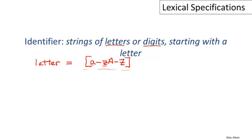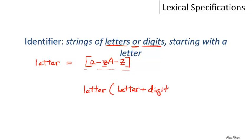Now we're in great shape. We already have a definition for digit, and now we have a definition for letter. So we can write out the rest of this definition. We want the whole regular expression to always begin with a letter — an identifier always begins with a letter. After that, it's allowed to be a string of letters or digits, so the OR suggests a union. After the first letter, we can have either a letter or a digit, and then an arbitrary string of those things, so we put a star on the whole thing. That is the definition of an identifier: begins with a single letter followed by zero or more letters and digits.